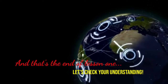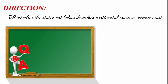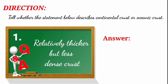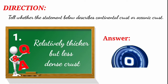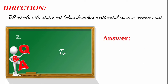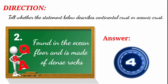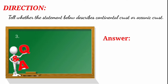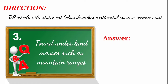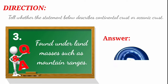That's the end of Lesson 1. Now let's check your understanding with a simple exercise. Tell whether each statement describes continental crust or oceanic crust. Number 1: Relatively thicker but less dense crust. Number 2: Found in the ocean floor and is made of dense rocks. Number 3: Found under land masses such as mountain ranges.